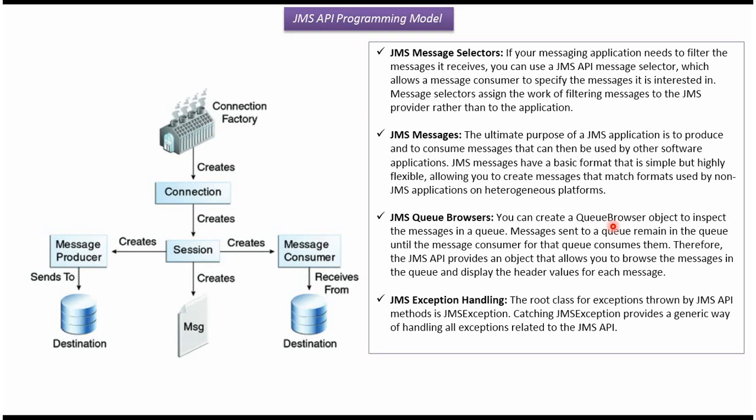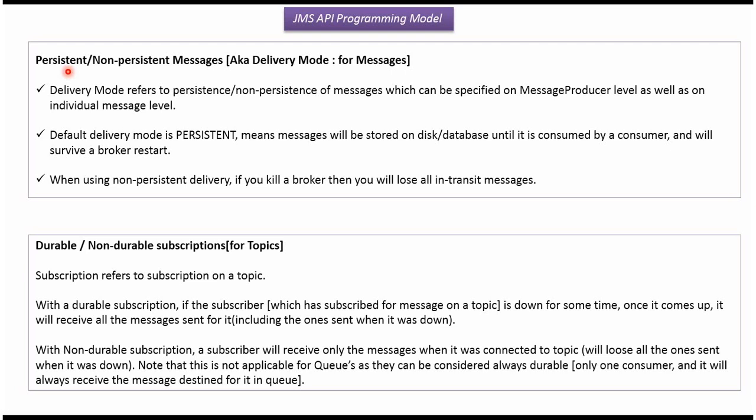There are two kinds of delivery modes: the first one is Persistent and the second one is Non-Persistent. If the delivery mode is Persistent, messages will be stored on disk or in a database until they are consumed by the consumer, and messages will survive a broker restart. In the case of Non-Persistent delivery mode, if we kill the broker we will lose all the in-transit messages.